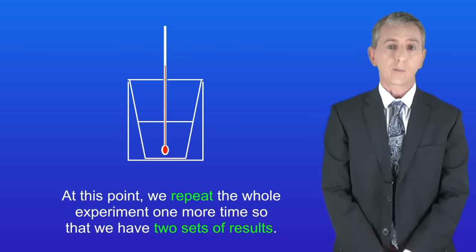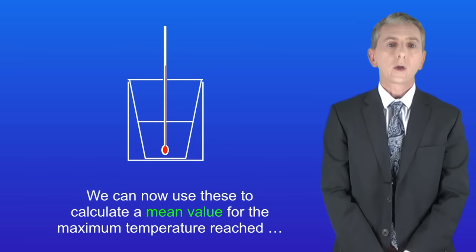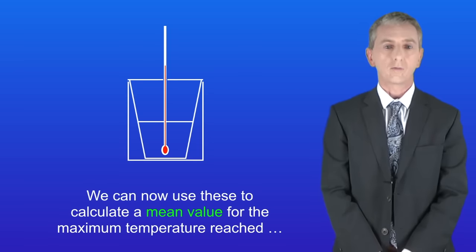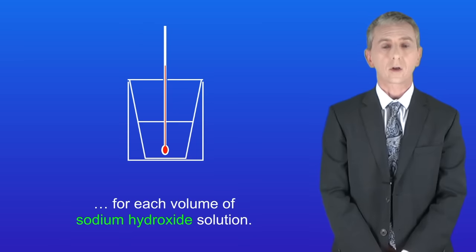At this point we repeat the whole experiment one more time so we've got two sets of results. We can now use these to calculate a mean value for the maximum temperature reached for each volume of sodium hydroxide solution.